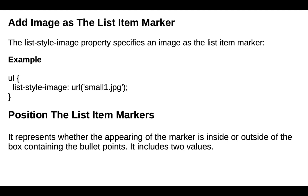We can also add an image as the list item marker. The list-style-image property specifies an image as the list item marker. For example, we use the list-style-image property and set the URL, specifying the path of the image. Next, we use the position property.